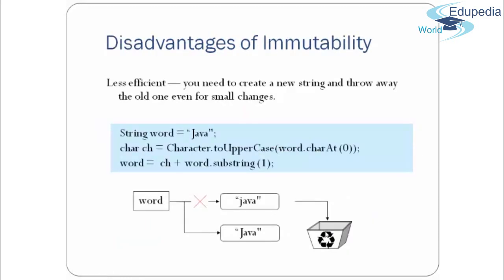The disadvantage of immutability is that you need to create a new string and discard the old one even for a small change. For example, if you have the string "java" and want to change the first character to uppercase 'J', a new string "Java" is created in memory. The old string still exists until garbage collection removes it. So any small change results in a new string being created.